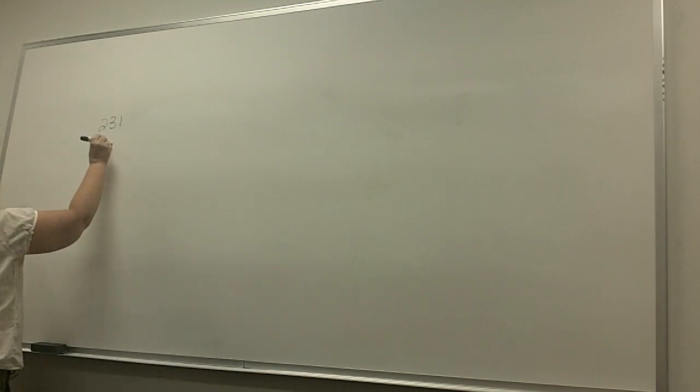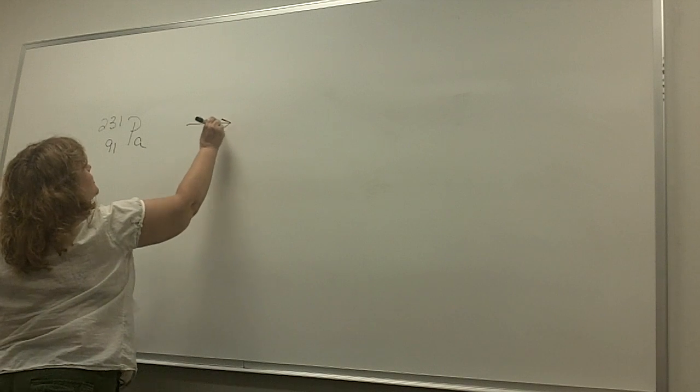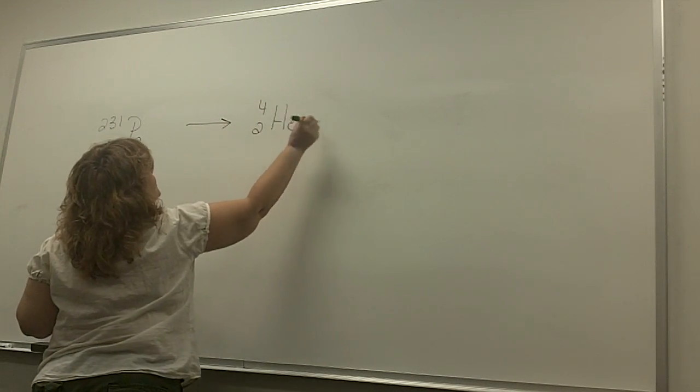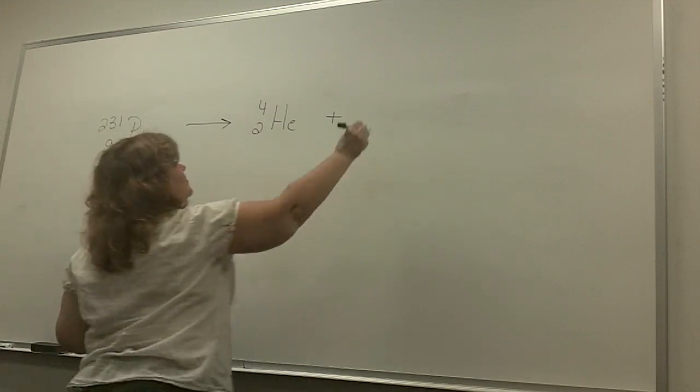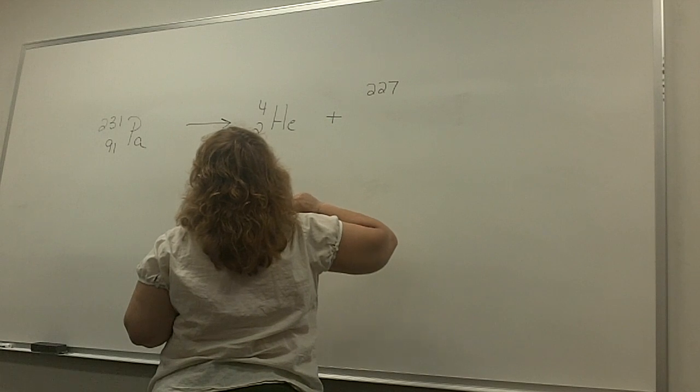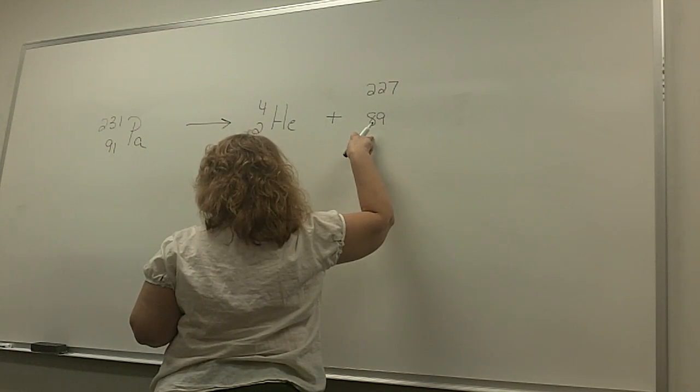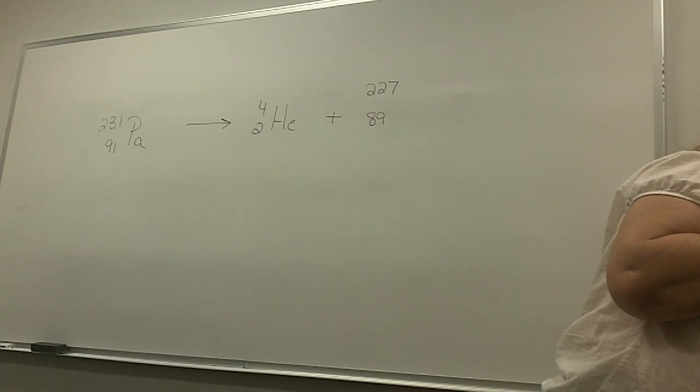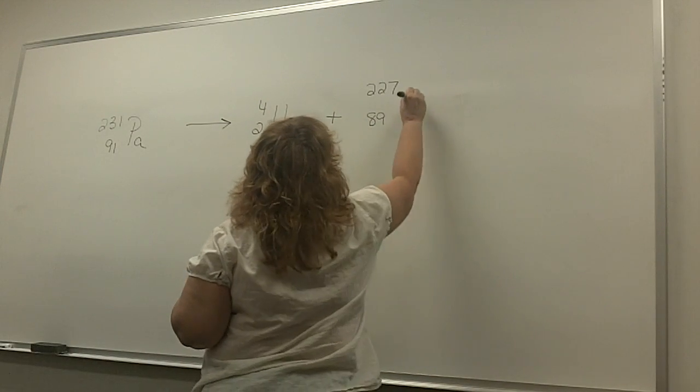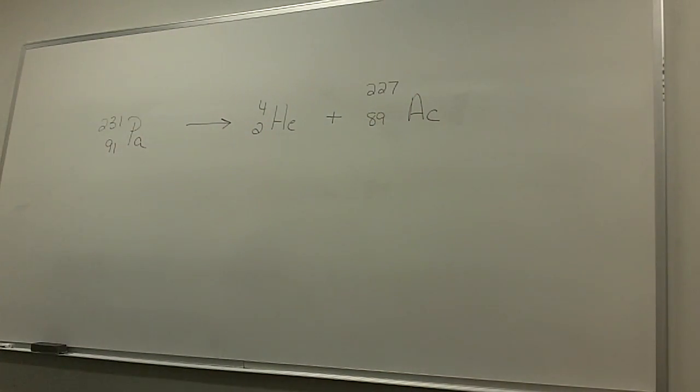So write the nuclear equation for the alpha decay. So if I'm giving off an alpha particle, it's 4, 2, He, and what else? So 231 minus 4 is 227. And then 91 minus 2 is 89. What element is 89? Ac. Actinium. So you see how this is working?